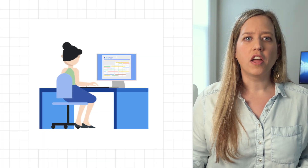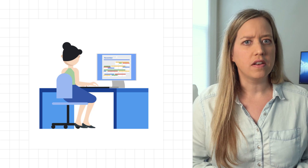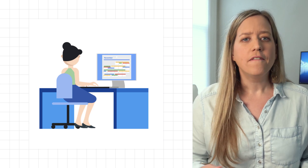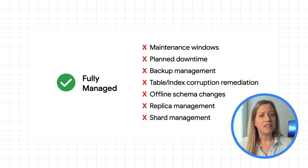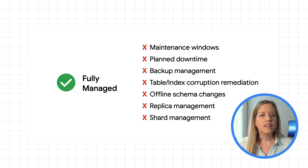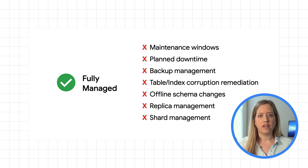Another source of potential downtime is regular maintenance. Software gets updated, firmware is patched, security policies are revised — which in most cases means bringing down the database. In a world of always-on access and increasing interdependence of business processes, finding maintenance windows across an application stack can be impossible. With Spanner, though, planned database maintenance is a thing of the past. Spanner is fully managed, and Google's best-in-class site reliability engineering ensures it's always up to date without having to bring down the database.